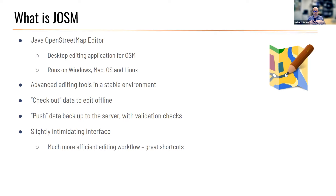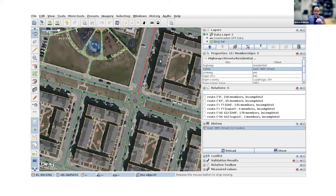It's a more deliberate exchange — pulling data down, doing your edits, and pushing them back up. When uploading, JOSM performs a number of topological validation checks: it looks for roads that cross each other without a node at the intersection, roads going through buildings, or buildings that overlap. These topological errors are flagged so you have an opportunity to fix them before reconciling with the OSM database. JOSM also has great shortcuts so you can become a very efficient mapper.